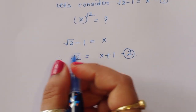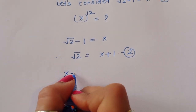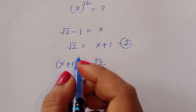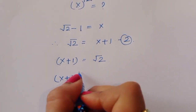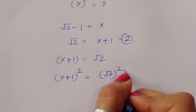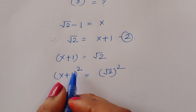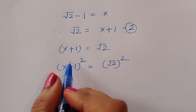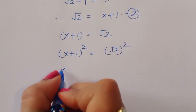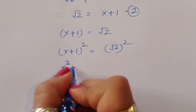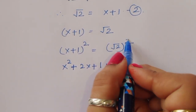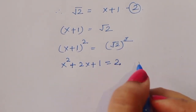Now, x + 1 = √2. Taking square on both sides, (x + 1)² = (√2)². Using the formula (a + b)² = a² + 2ab + b², we get x² + 2x + 1 = 2.